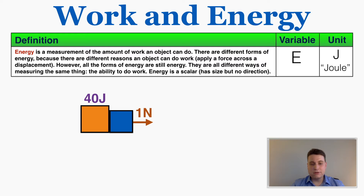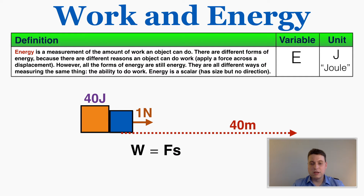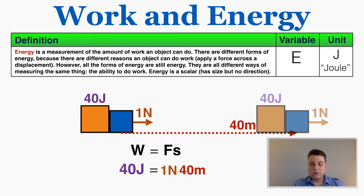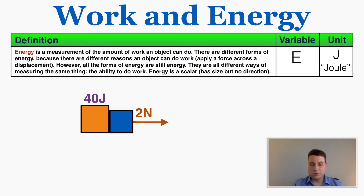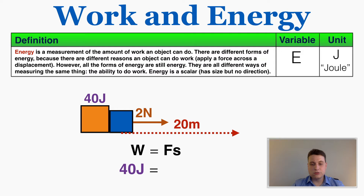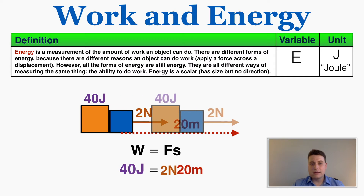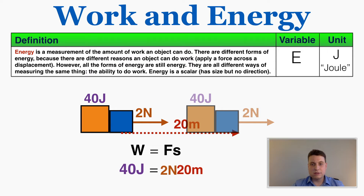For example, if the orange box applies a force of 1 newton on the blue box, it could apply that force for 40 meters, because 40 times 1 equals 40 joules — that's the equation for work. So it could move like this. If the orange box applies 2 newtons, it could push the blue box for 20 meters, because 2 newtons times 20 meters equals 40 joules. We don't know exactly which will happen — that depends on other factors — but all of these are possible because the orange box contains 40 joules.